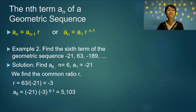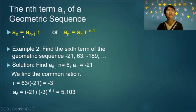The nth term of a geometric sequence uses the formula: a sub n equals a sub (n minus 1) times r. Here, a sub (n minus 1) is the last known term, so to get the next term you simply multiply it by the common ratio.